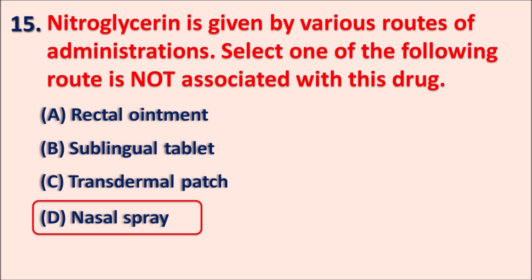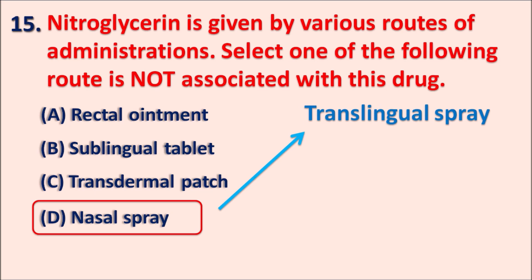Nitroglycerin has high first-pass metabolism, so it can be given as a sublingual tablet or sublingual spray. It can also pass through the skin, so it can be given as a transdermal patch. Because of first-pass metabolism it can also be given as a rectal ointment. Nitroglycerin is volatile in nature so it can be given as an aerosol, but it is not given as a nasal spray. It is mainly given as a translingual spray — placed under the tongue so the drug directly enters systemic circulation, avoiding first-pass metabolism. This route is also called sublingual spray.